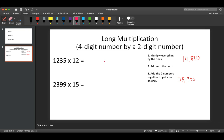In this video I'm going to show you how we do long multiplication, using four digits by two digits. I've put here some instructions for how we do this as well as showcase it to you. So 1235 multiplied by 12.